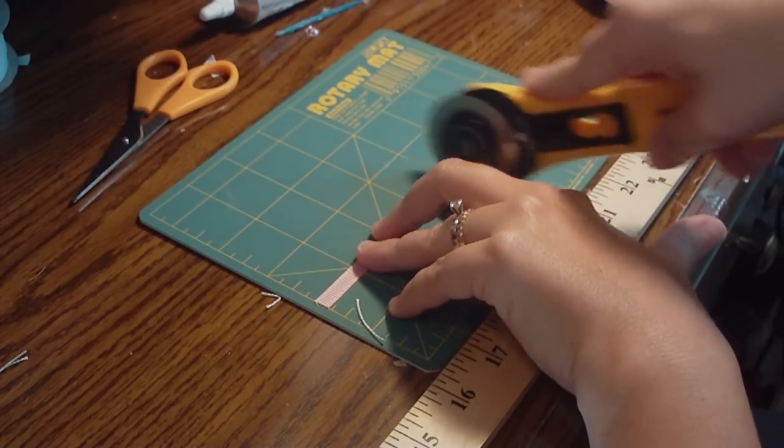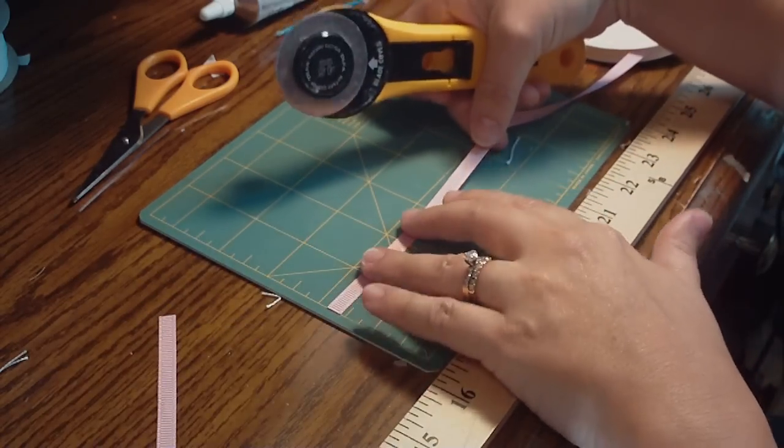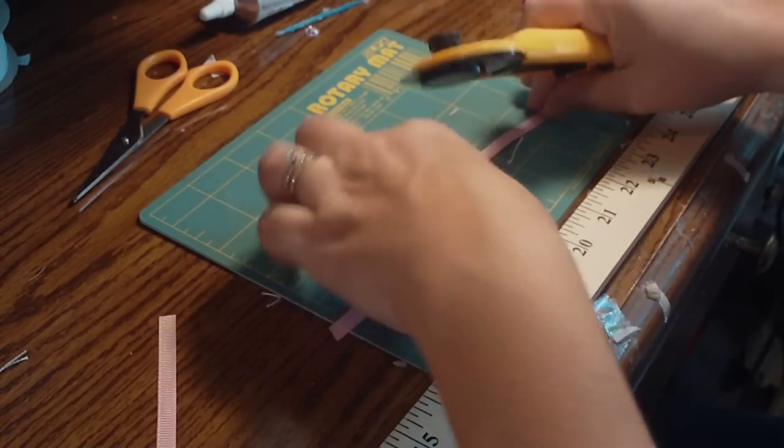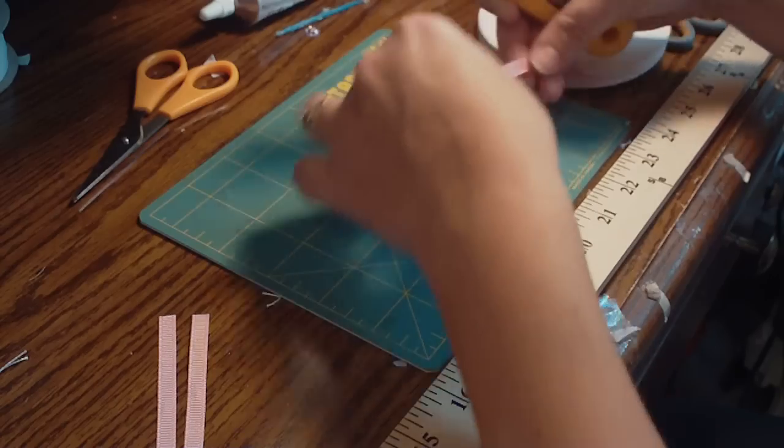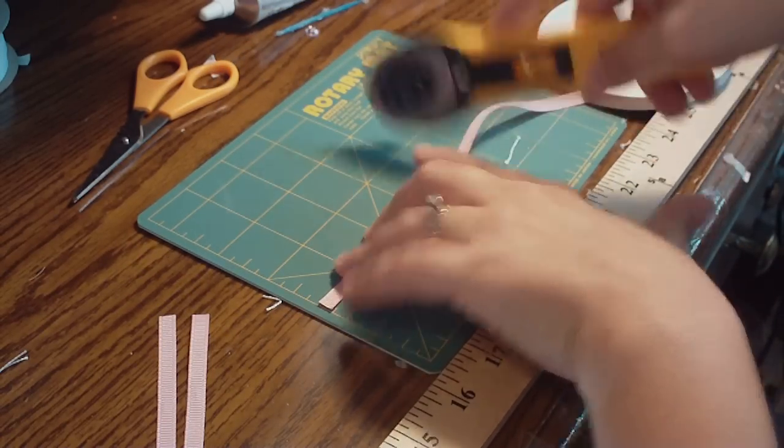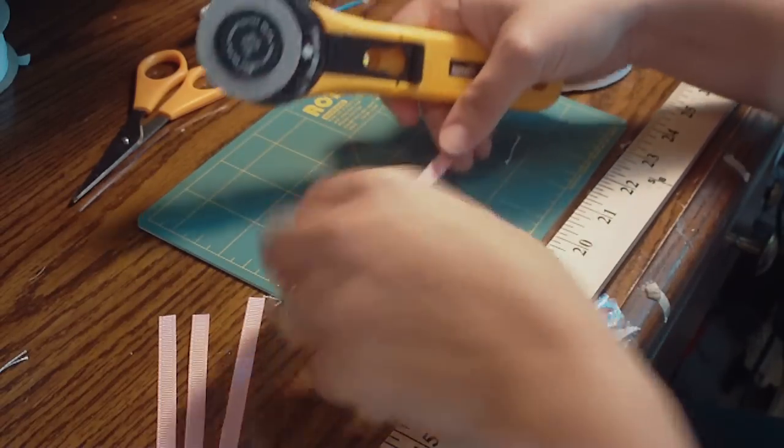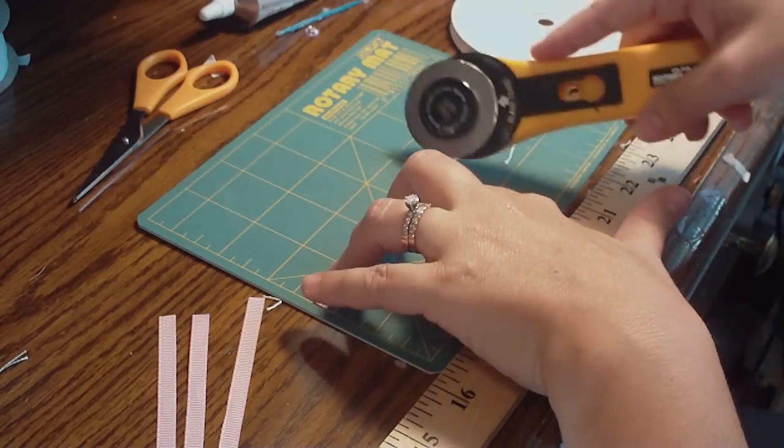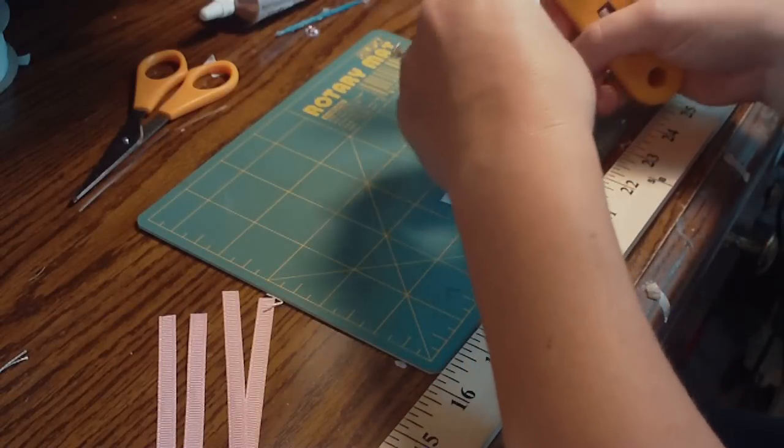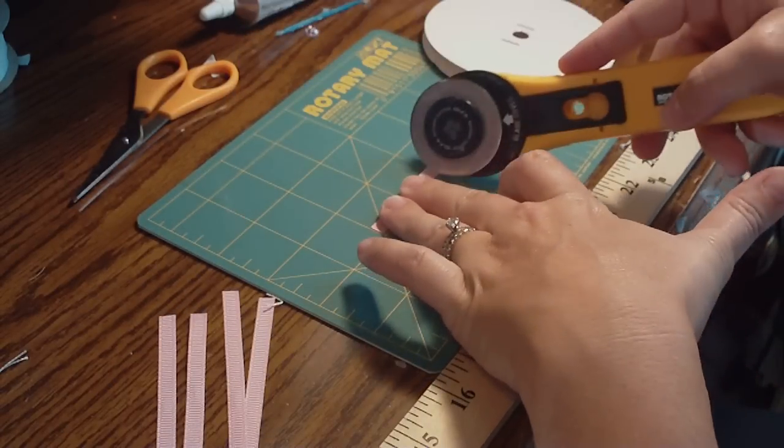So I use my rotary mat and rotary cutter to make the flowers, because it's easy to make them all the same size. You don't have to obviously use this, but it makes it easy for me if I'm home making them. So we have four four-inch pieces of pink ribbon, and then I cut another, say about two-inch piece.